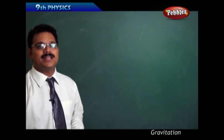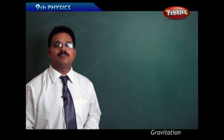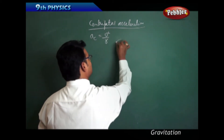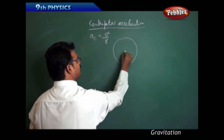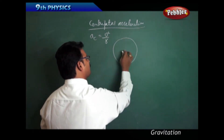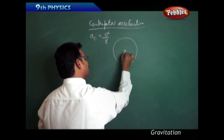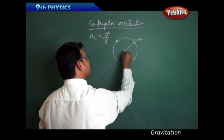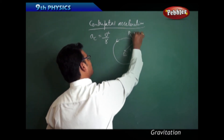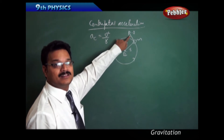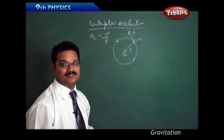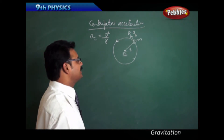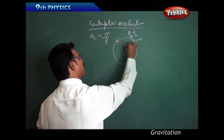We have found the centripetal acceleration formula: AC equals V squared by R. This is the circular path, and this is the center of the circle. The earth is at the center and the moon revolves around the earth. The radius and velocity are shown — velocity is tangential to the circle, and radius is perpendicular to the velocity.